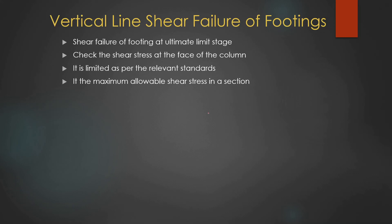Vertical line shear failure is the failure of the footing along its support edge. The maximum shear stress that the footing can bear must be checked. If you know the axial load and the depth, you can find the shear stress at that location. That stress should not exceed the maximum allowable shear stress of the concrete. Concrete has a certain shear capacity without reinforcement, and that maximum allowable shear capacity must be met. If exceeded, there may be vertical line shear failure in the foundation.